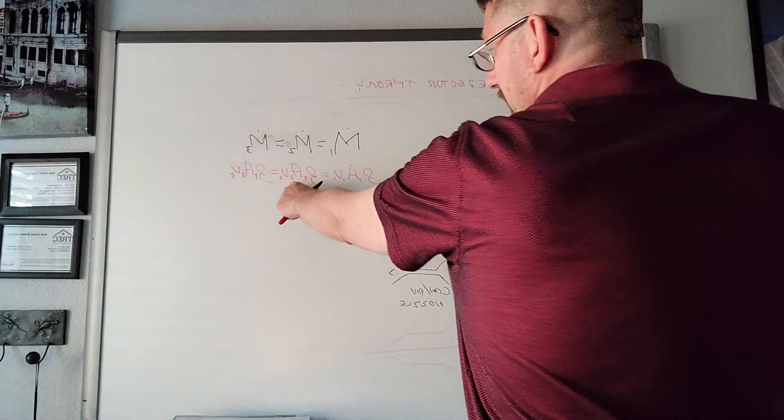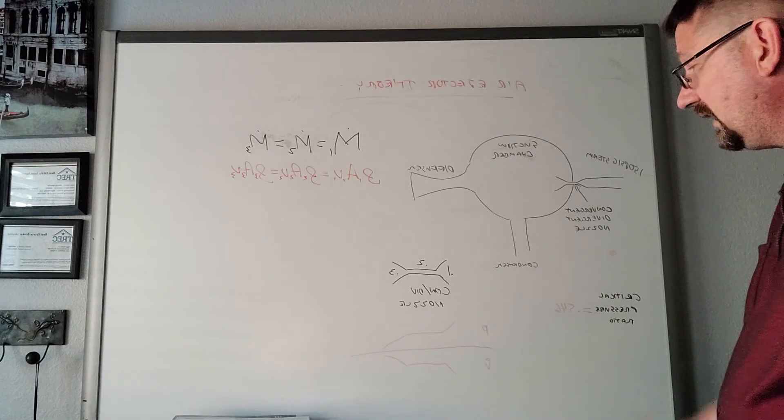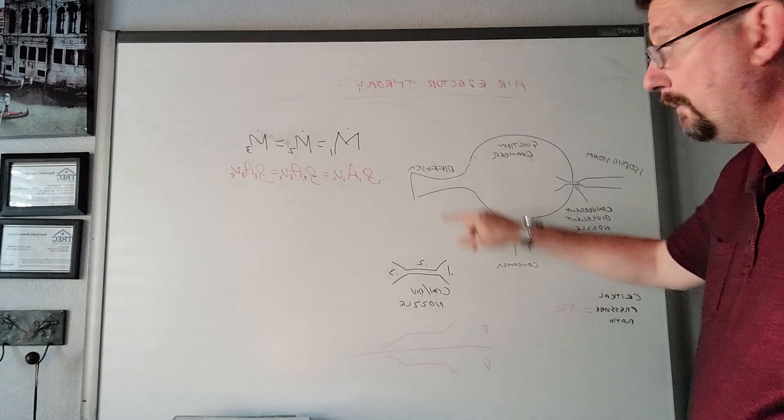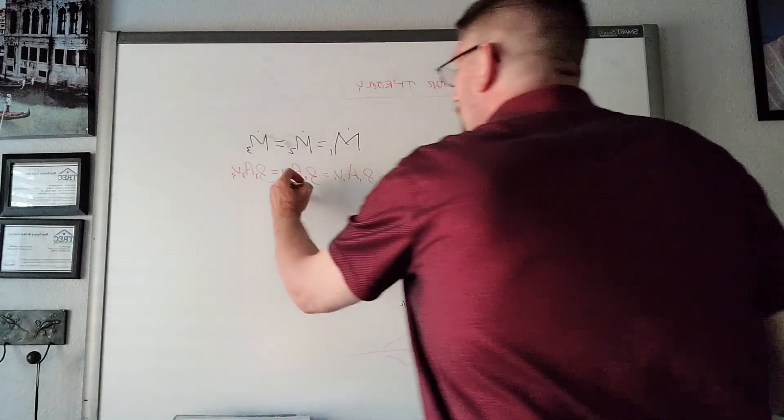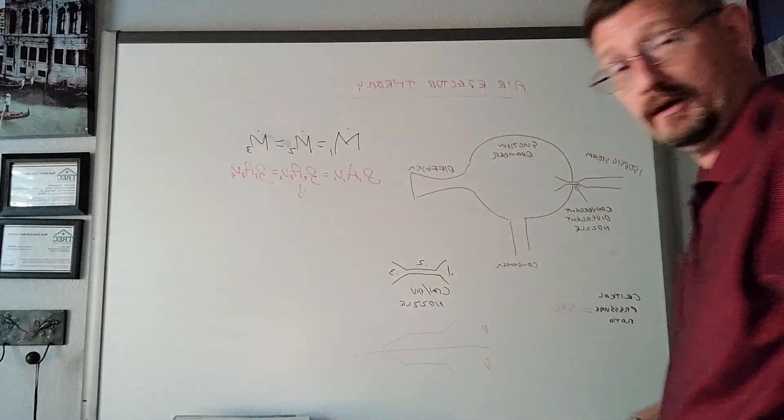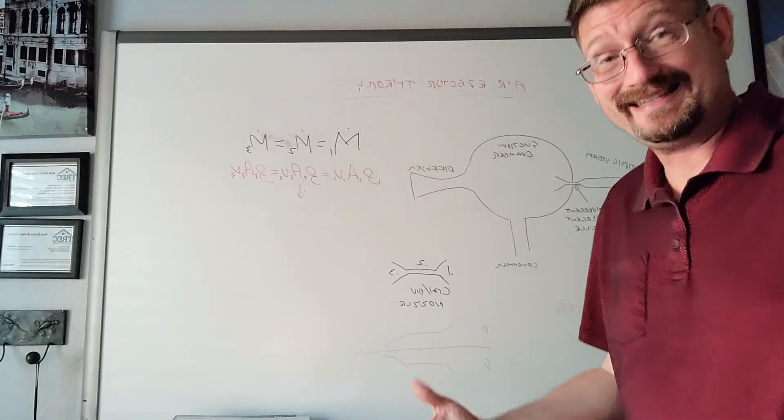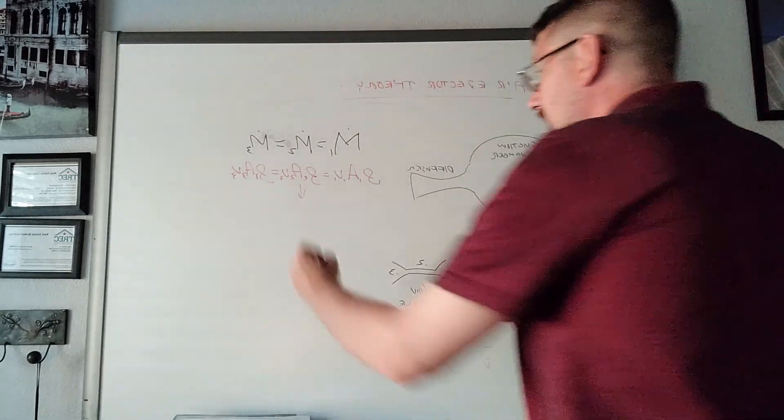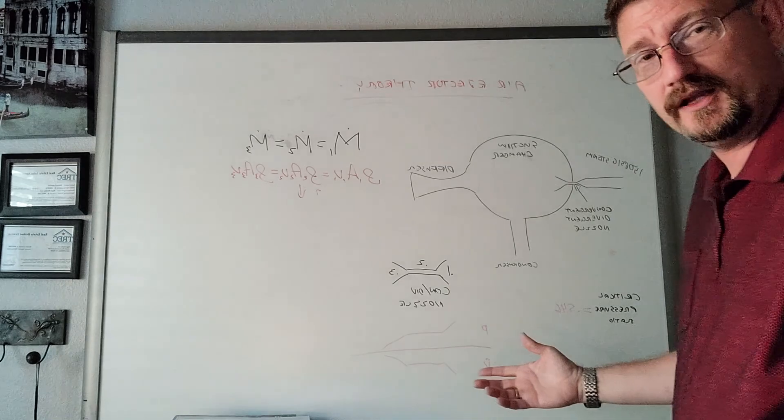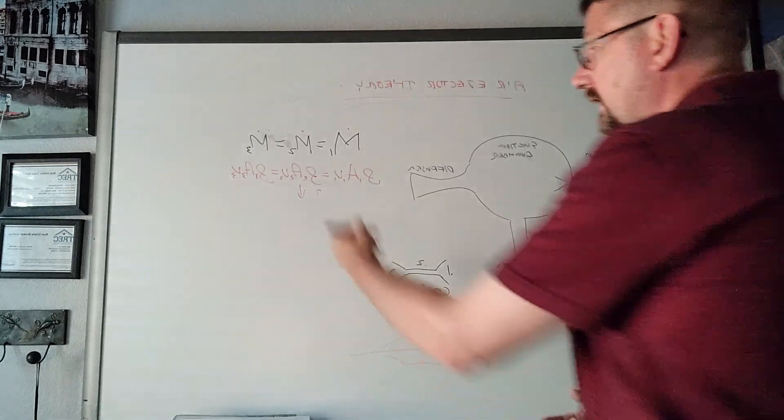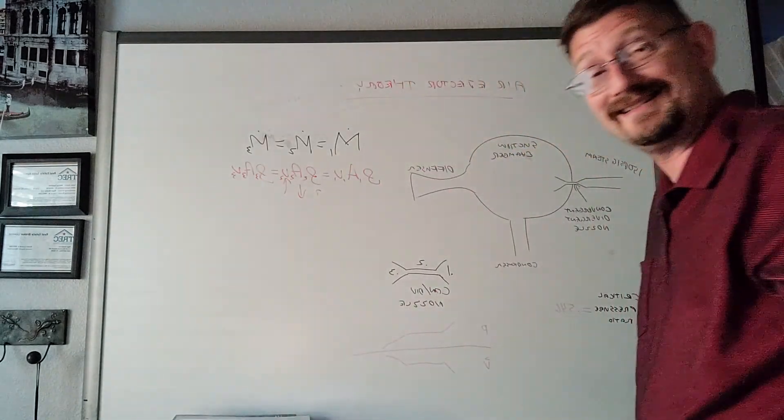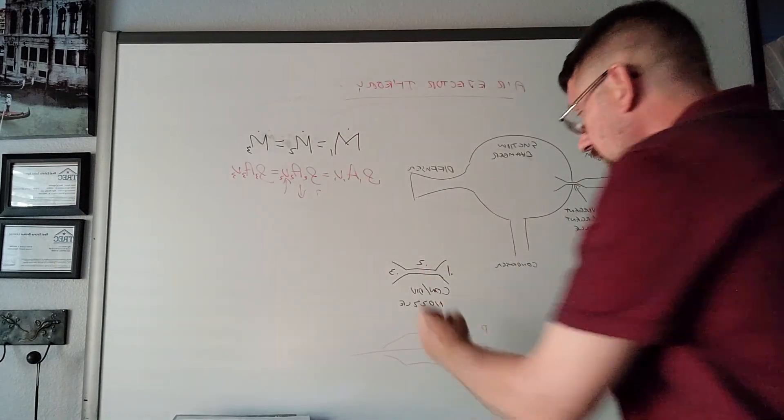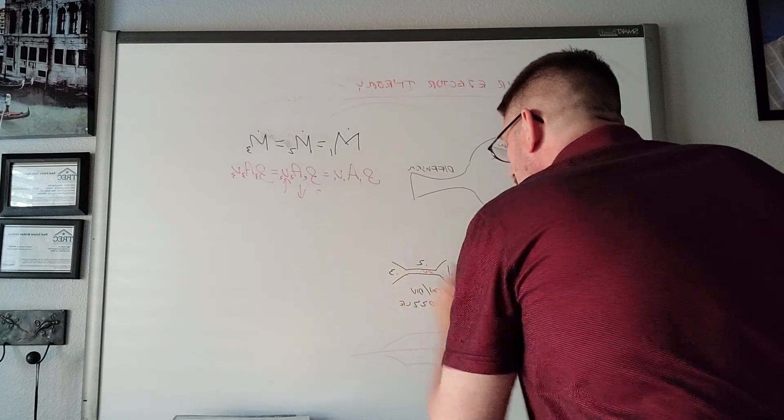My density times area times speed are all equal. Going from point 1 to point 2, my area is getting smaller. Steam is a gas, so it's compressible—the density will go up just a little bit, but the area change is much greater. That's going to cause our speed or velocity to go up, and right here in the throat we hit sonic velocity.